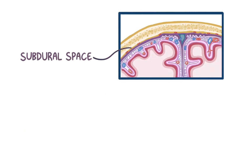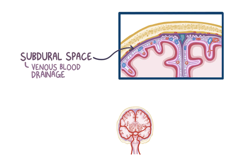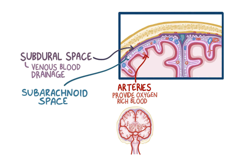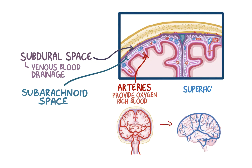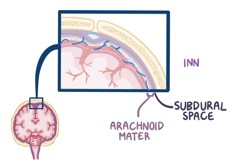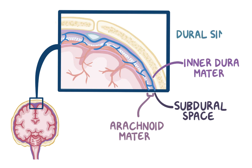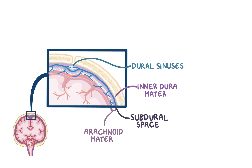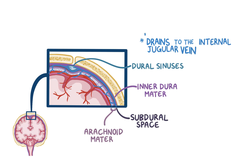The subdural space plays a major role in venous blood drainage in the brain. The surface of the brain is supplied by numerous arteries in the subarachnoid space that provide oxygen-rich blood to the brain. After the brain tissue has taken up the oxygen and nutrients, the blood drains into superficial cerebral veins, or bridging veins, that also sit in the subarachnoid space. These veins travel through the arachnoid mater, pass through the subdural space, and penetrate the inner layer of the dura mater to drain into the dural venous sinuses located between the two layers of the dura mater. Eventually, the blood in the venous sinuses drains into the internal jugular vein and returns to the heart.